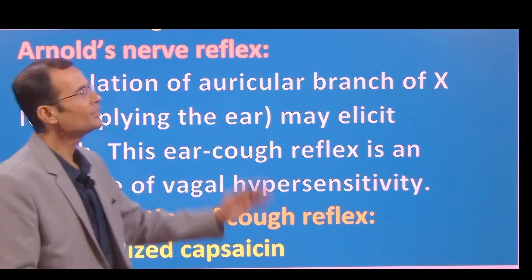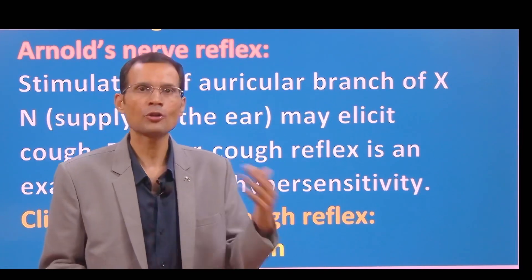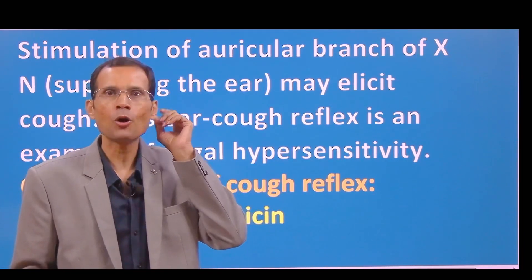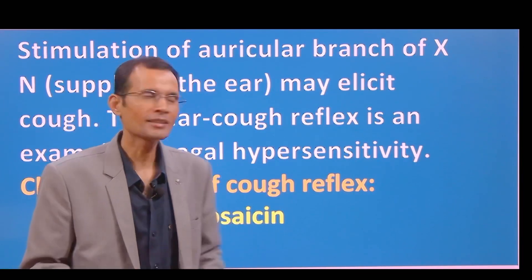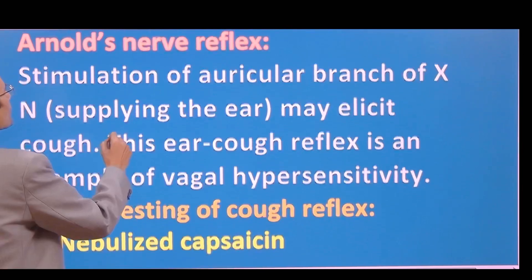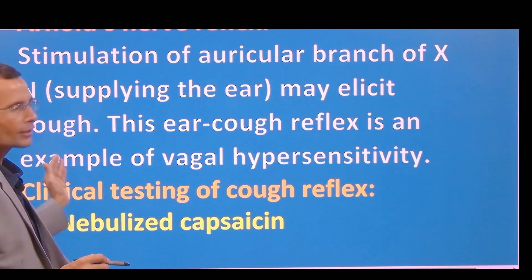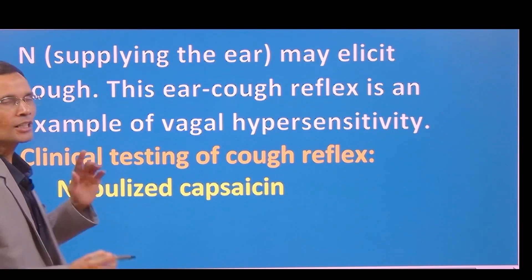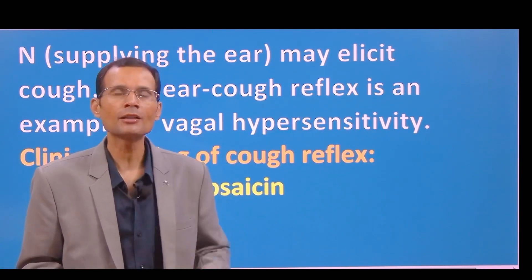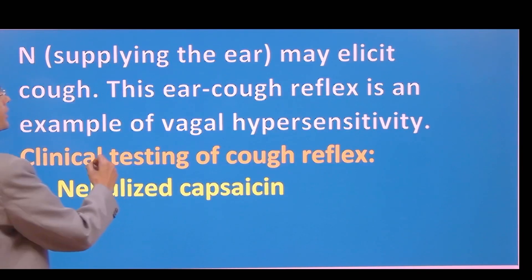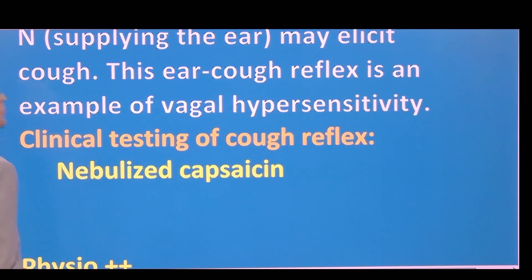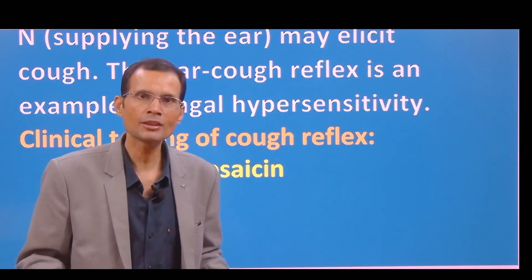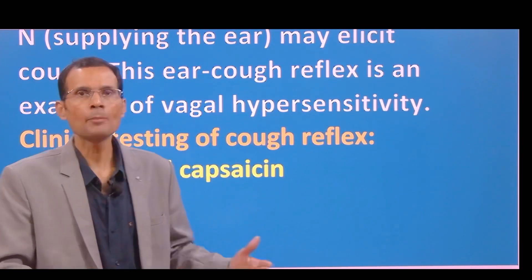There is something called Arnold's nerve reflex. Stimulation of the auricular branch of the vagus nerve supplying the ear may elicit a cough. So stimulation of the auricle or ear may result in a cough reflex. This is called the ear-cough reflex or Arnold's nerve reflex, and it is said to be an example of vagal hypersensitivity — in some people the vagus nerve is hypersensitive.